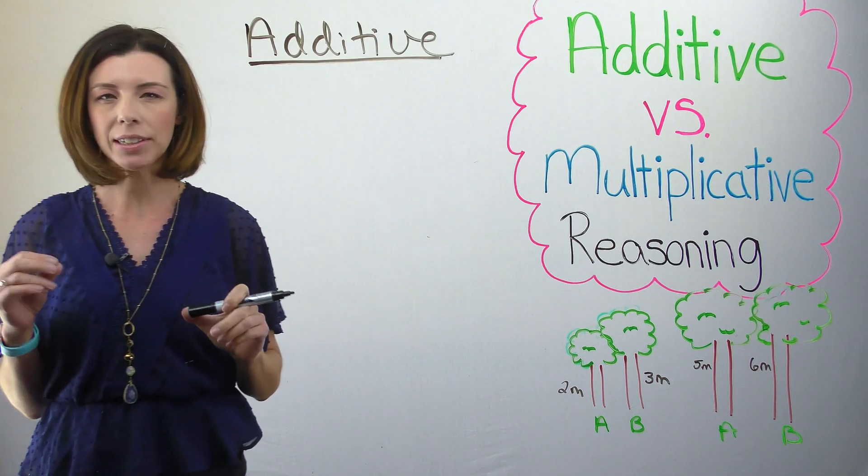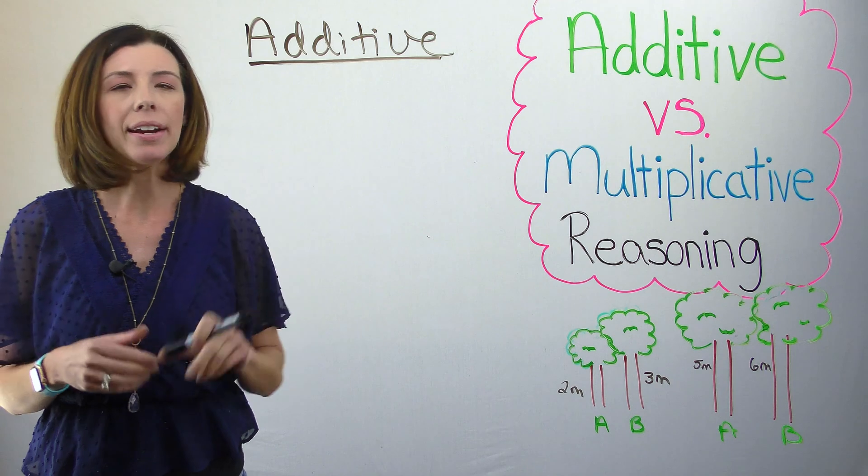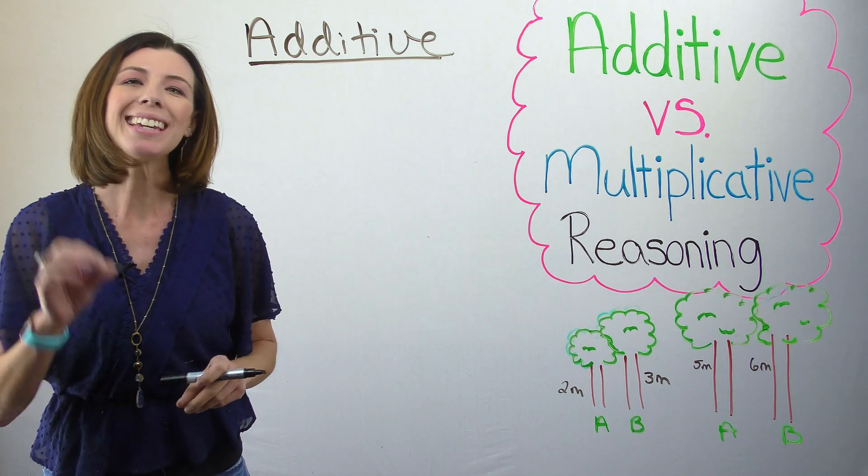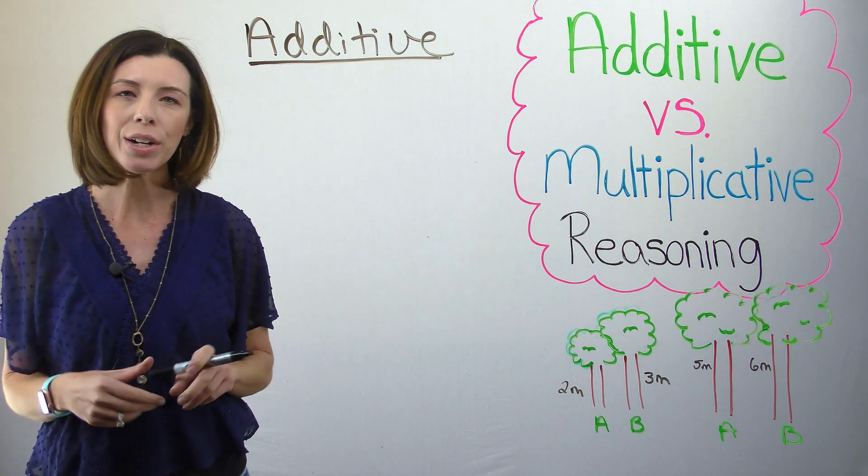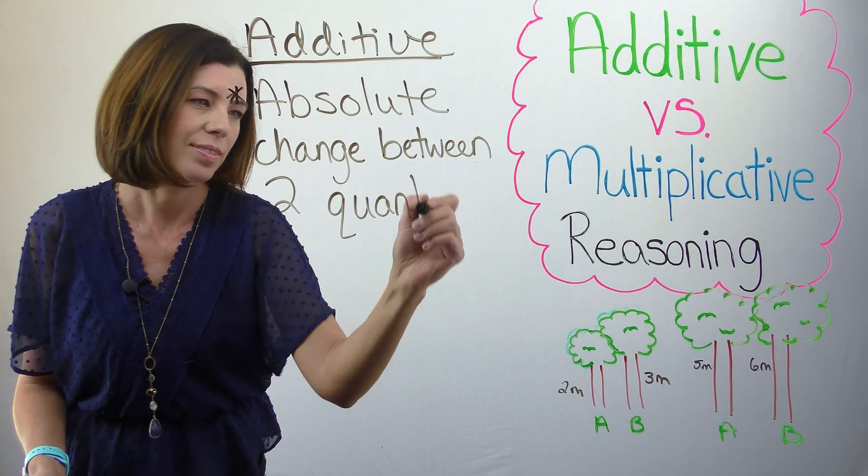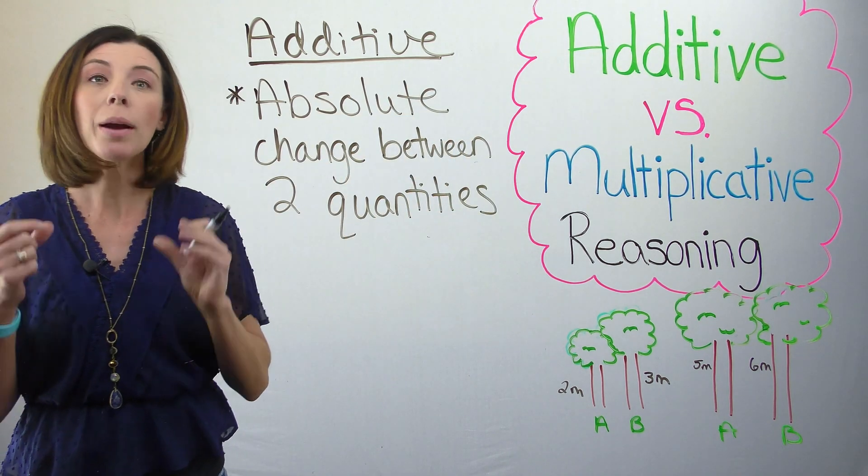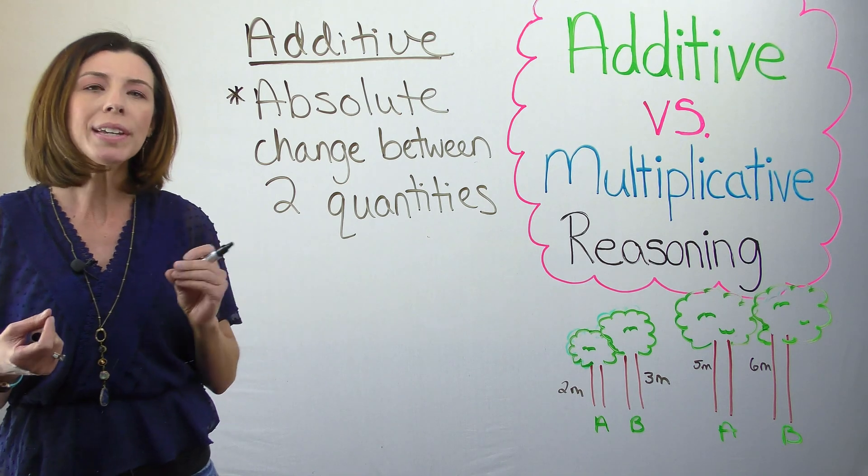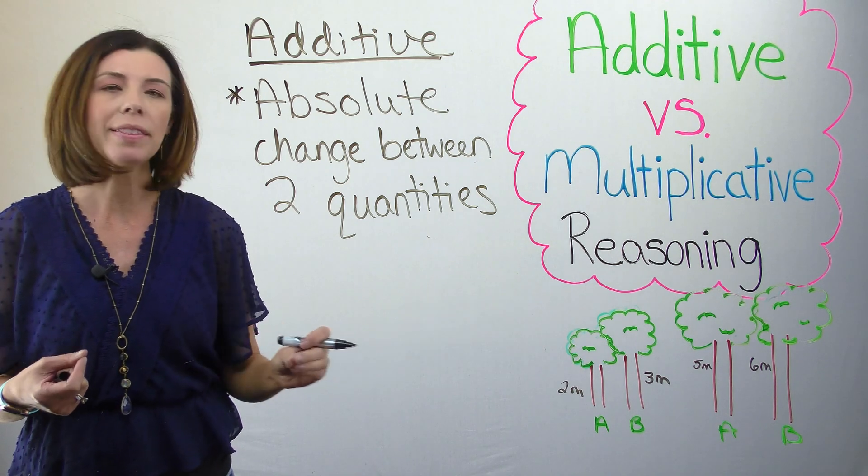All right, so let's dive a little deeper. When I'm thinking about additive reasoning, I'm looking at the absolute change between two quantities. When I'm thinking absolute change, I'm thinking of subtraction. So again, think about how I was determining that to begin with.